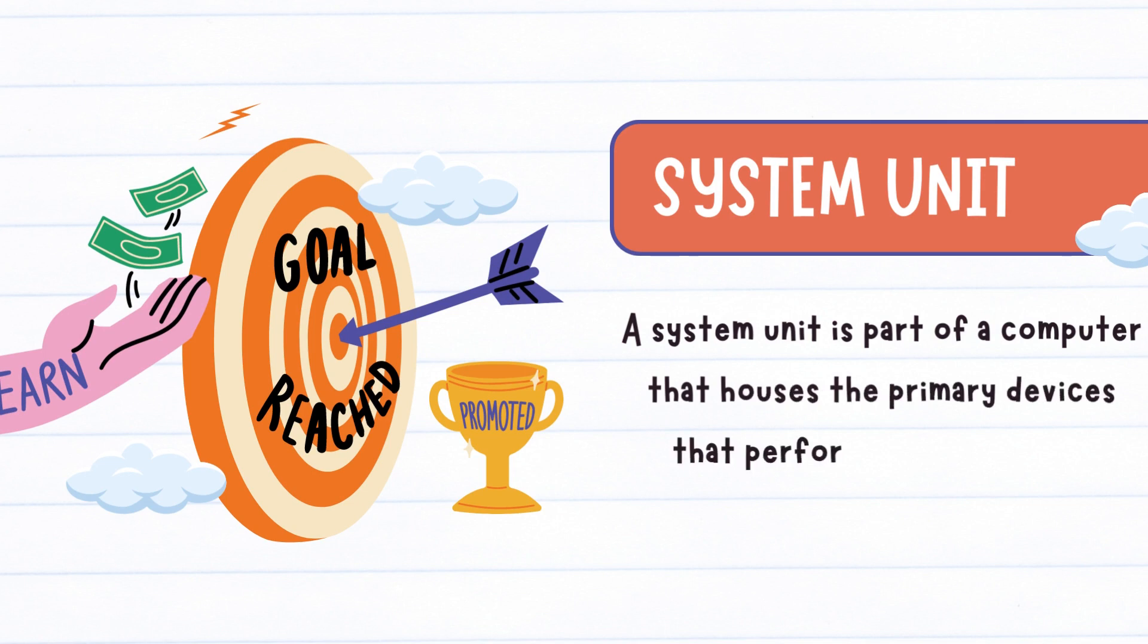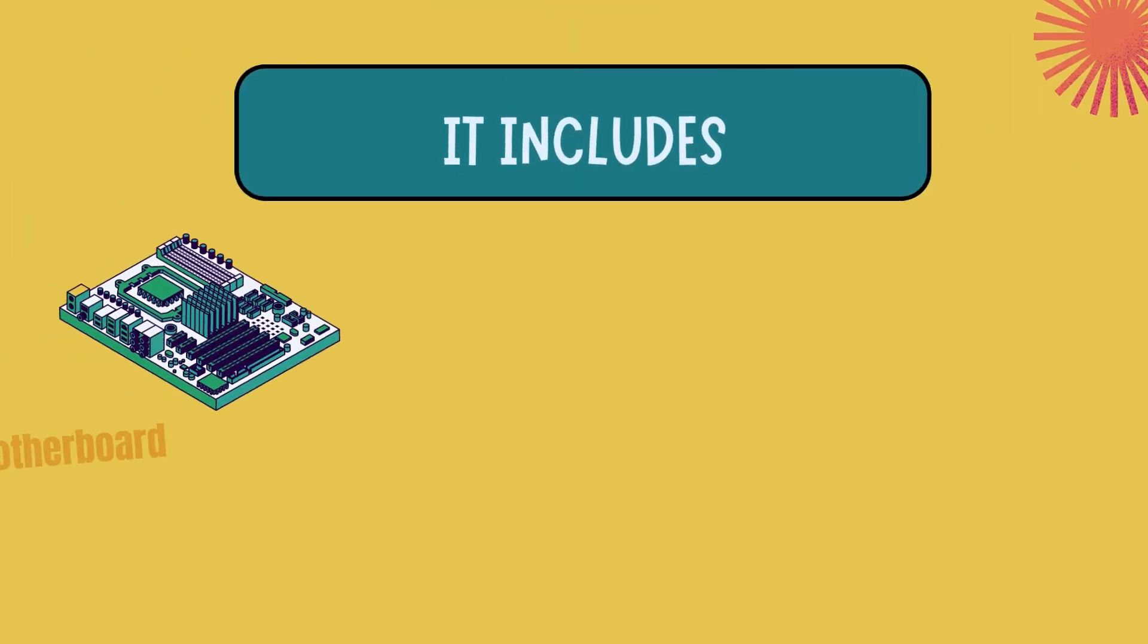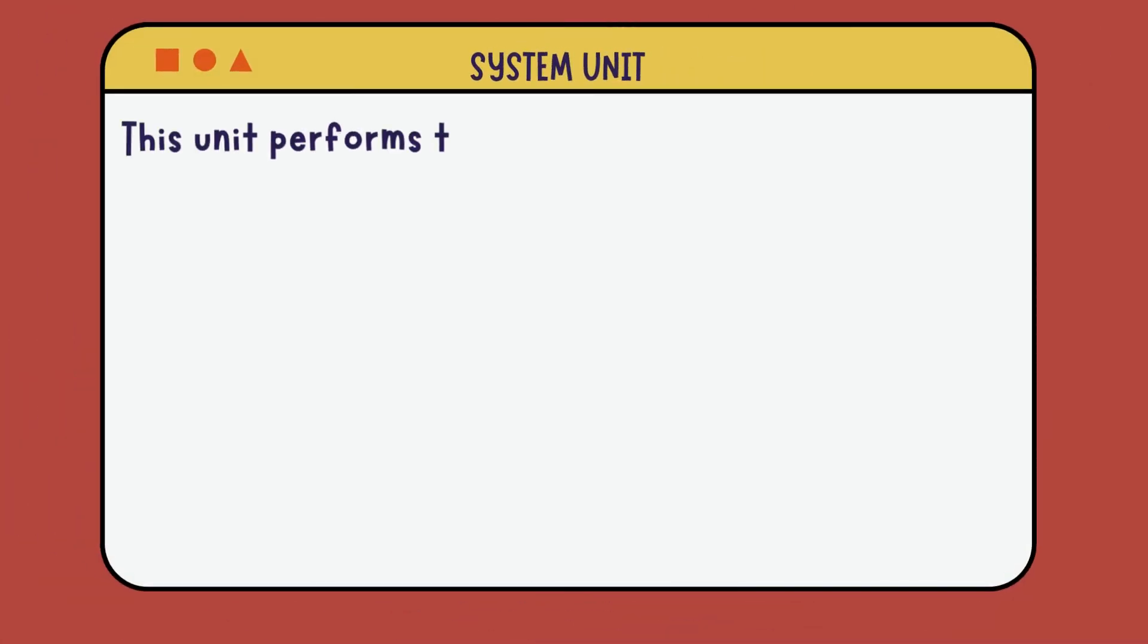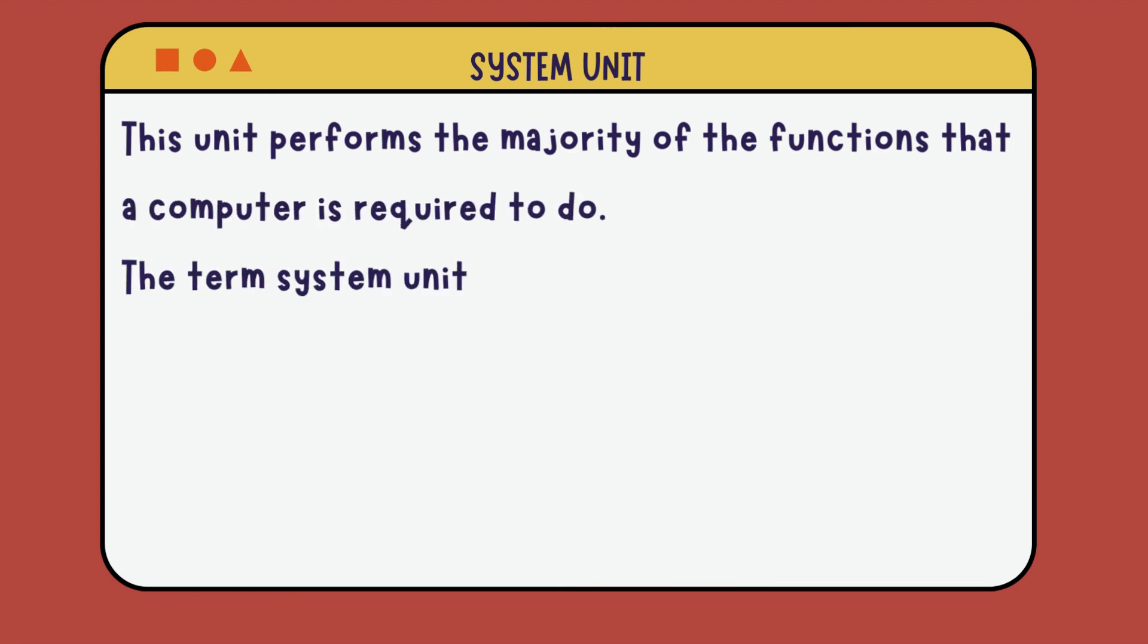It includes motherboard, CPU, RAM, and all the other components, as well as the case in which these devices are enclosed. This unit performs the majority of the functions that a computer is required to do, and the term system unit is generally used to differentiate between the computer itself and its peripheral devices.